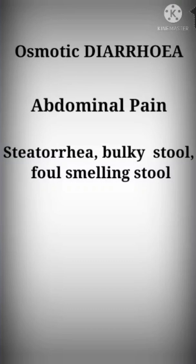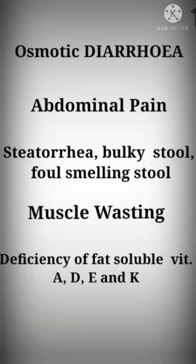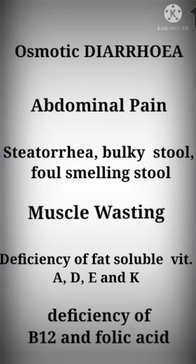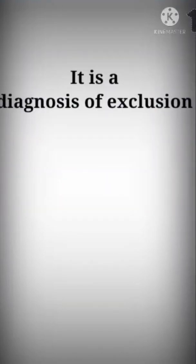Muscle wasting occurs due to malabsorption. There is deficiency of fat-soluble vitamins — those are vitamins A, D, E, and K. There is also deficiency of vitamin B12 and folic acid. Tropical sprue is a diagnosis of exclusion.